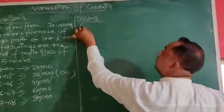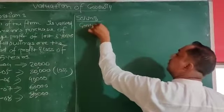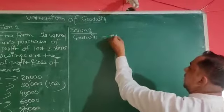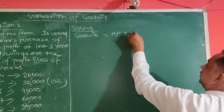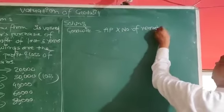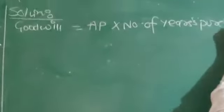What we have to find out? We have to find out goodwill. Goodwill equals average profit multiplied by number of years purchase.